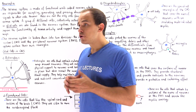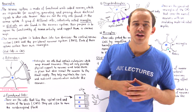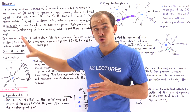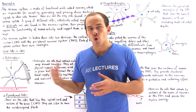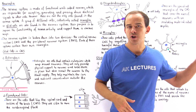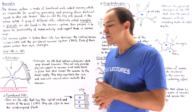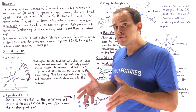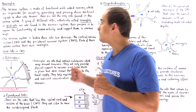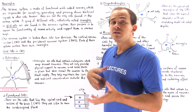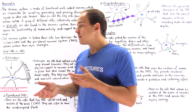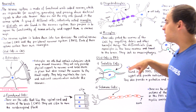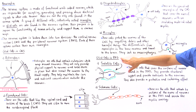Generally speaking, our nervous system can be broken down into two divisions. We have the central nervous system, which includes the brain and the spinal cord, and we have the peripheral nervous system, which includes everything else. These two divisions themselves contain their own different types of Neuroglia.